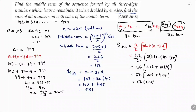56 × 650 = 36,400. This is the sum of all terms on the left side of the middle term.